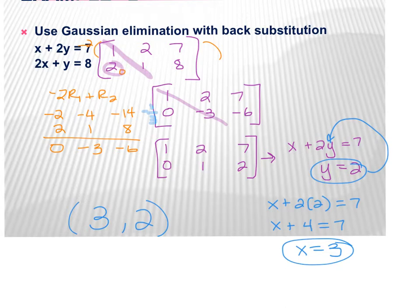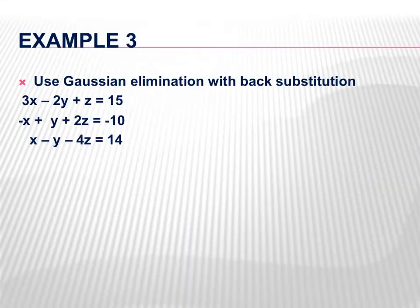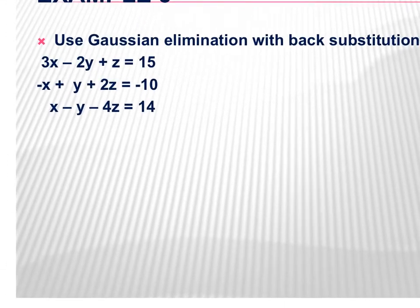So that's yet another way to solve a system — now you have elimination, substitution, graphing, and Gaussian elimination with back substitution. Do you want the answer in coordinate form? Yes — x then y, and if it's 3 variables, x then y then z. You always need to find both x and y.